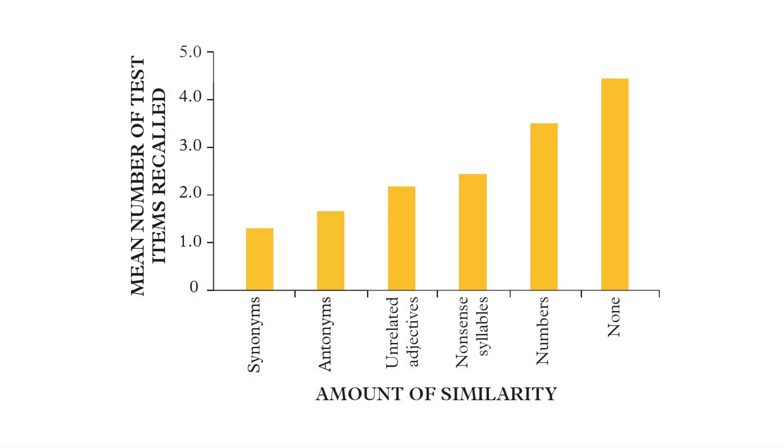In fact looking at a graph of all the results you can see that when the words in the second list were things like synonyms, that is the same meaning, or antonyms, that is words of an opposite meaning but obviously still related to the original, the poorer the participants got when it came to recall. But as the amount of similarity between the words in the second list to the first decreased, the less likely participants were to forget what the words in that original list were.